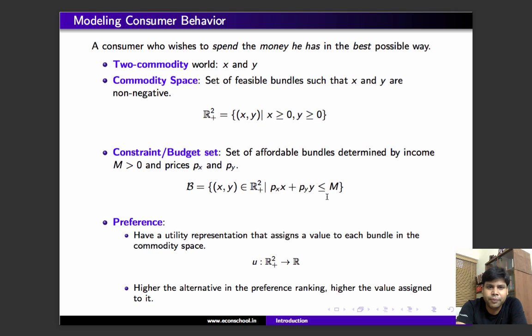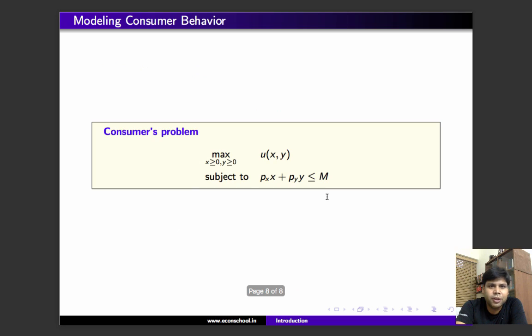Given this setup, we are now in a position to define the consumer's problem. The consumer's problem is simply to choose the bundle that maximizes utility subject to the constraint pₓx + pᵧy ≤ M.